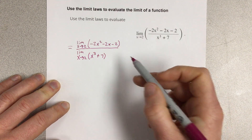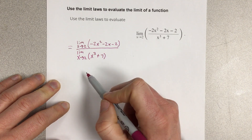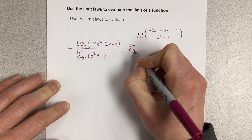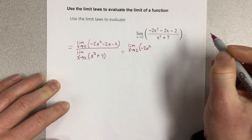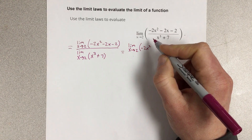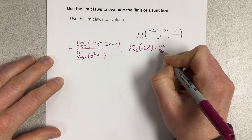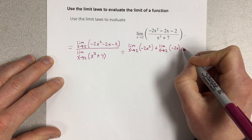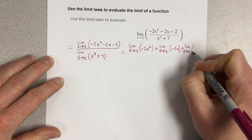Then you can use the sum and difference laws for the numerator and denominator separately. So we can say the limit as x approaches 2 for negative 2x squared, plus the limit as x approaches 2 of negative 2x, plus the limit as x approaches 2 for negative 2.